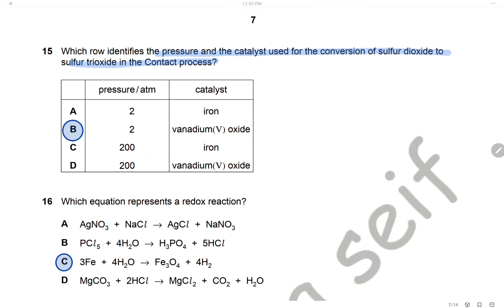Question 15: Which row identifies the pressure and catalyst used for the conversion of sulfur dioxide into sulfur trioxide in the contact process? The conditions are 2 atmospheres pressure and the catalyst vanadium pentoxide. The answer is B.